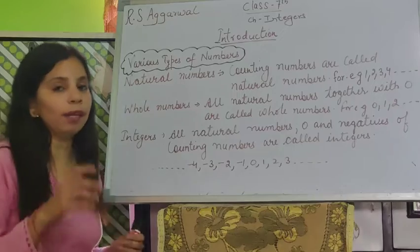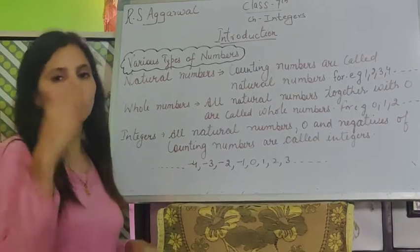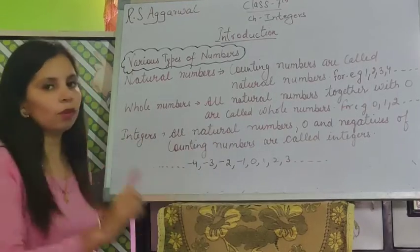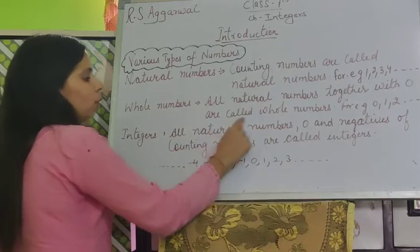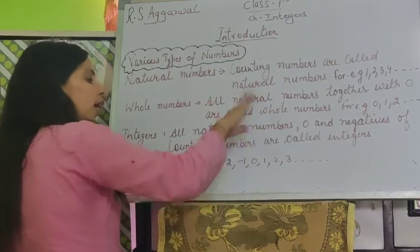Now comes integer. What is integer? Look, all the numbers of the world, whether positive or negative, whether zero, all the numbers are integers. All natural numbers will come, zero will also come, and negative numbers will also come.